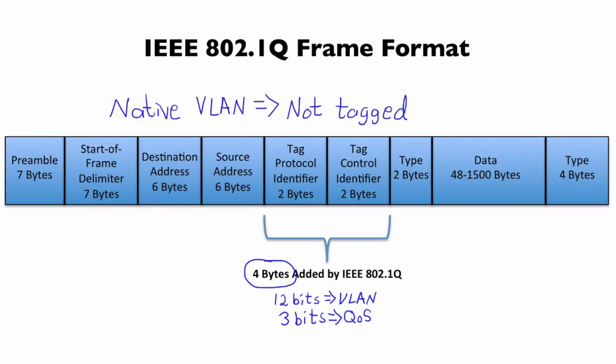Of course this implies that both switches - the switches at each end of a trunk - they need to agree on who the native VLAN is. Can you imagine?